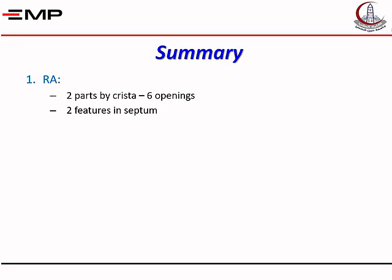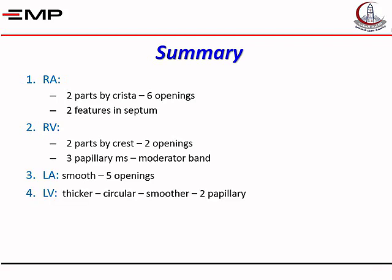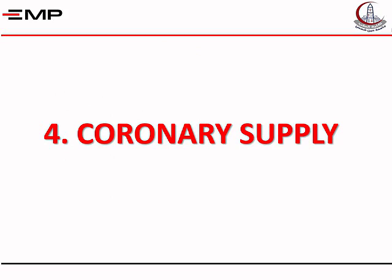In summary: the right atrium is made of two parts by the crista terminalis — smooth with several openings and rough. The fossa ovalis and annulus ovalis are features of the septum. The right ventricle is divided into two parts by the supraventricular crest, with three papillary muscles, a moderator band, and chordae tendineae. The left atrium is smooth with five openings — four for the pulmonary veins and one mitral orifice. The left ventricle has a thicker, circular, smoother wall with two papillary muscles.